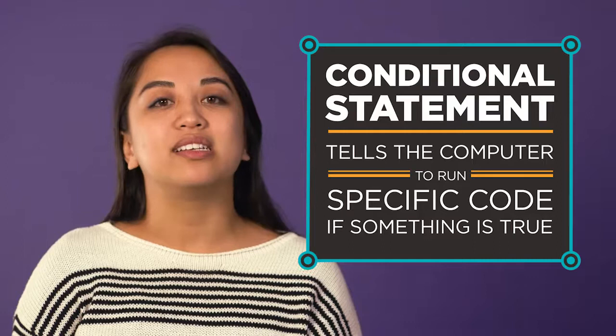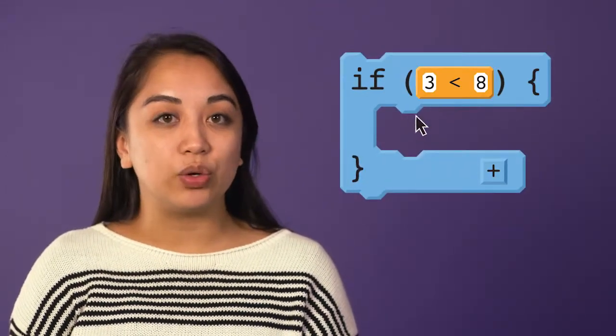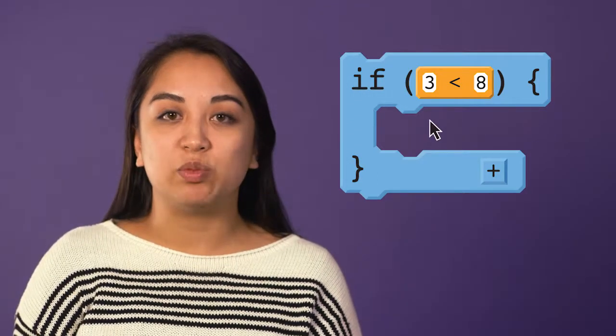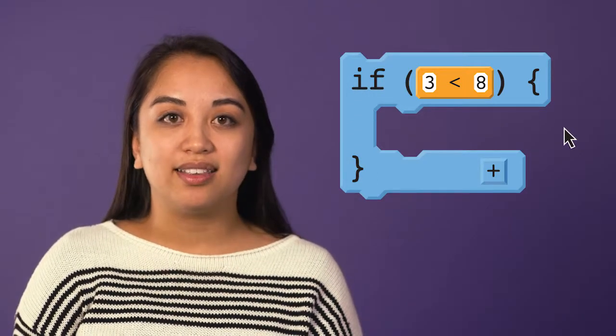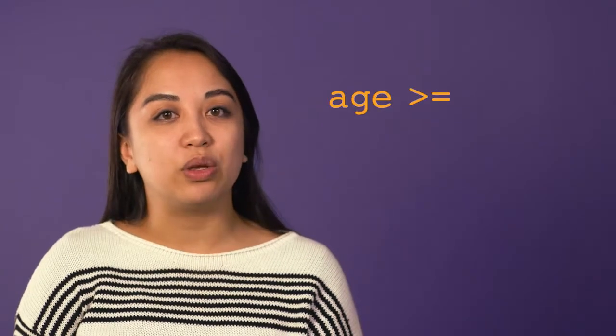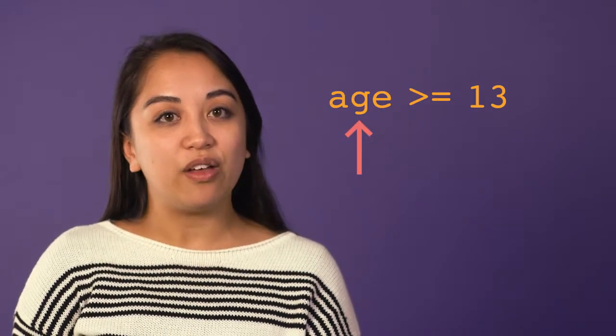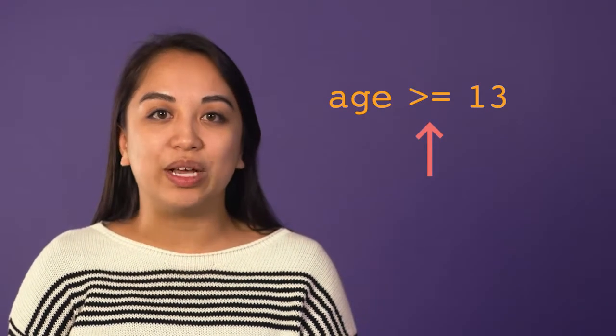The simplest conditional statement is an if statement. It says that if something is true, the computer should run a specific block of code. Let's say that you want to create a program that displays whether or not you are old enough to see a PG-13 movie. So the question we want the computer to evaluate is if age is greater than or equal to 13.